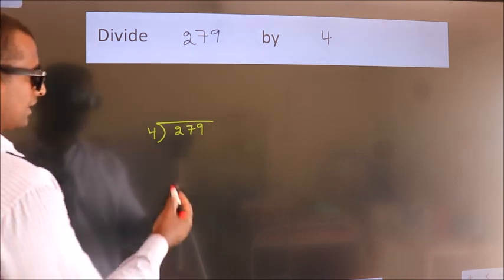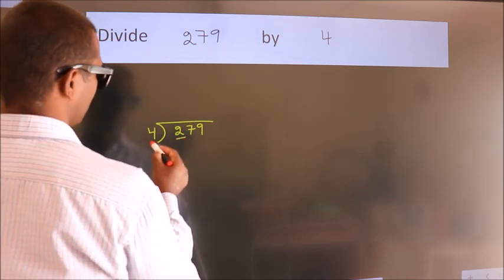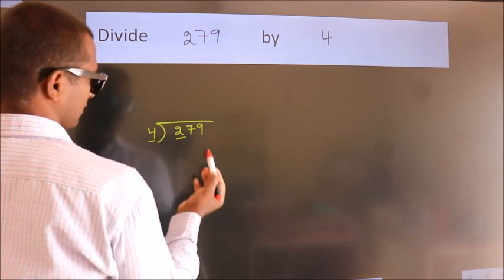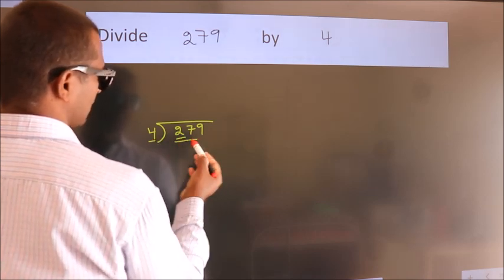Next, here we have 2, here 4. 2 is smaller than 4. So we should take 2 numbers, 27.